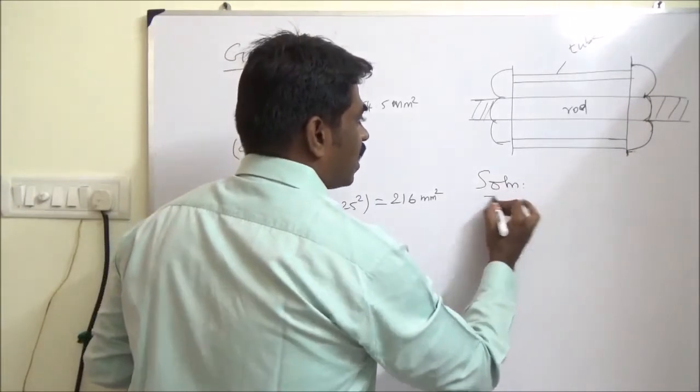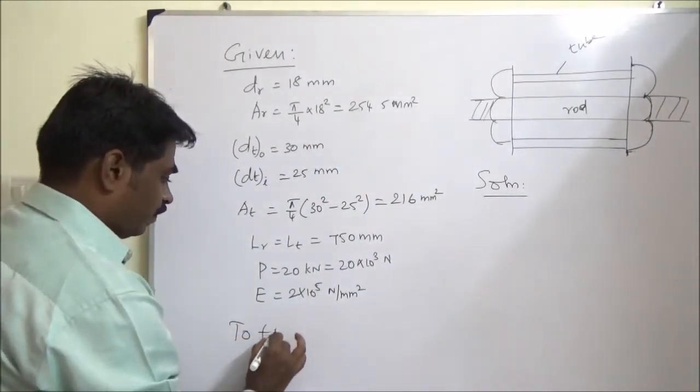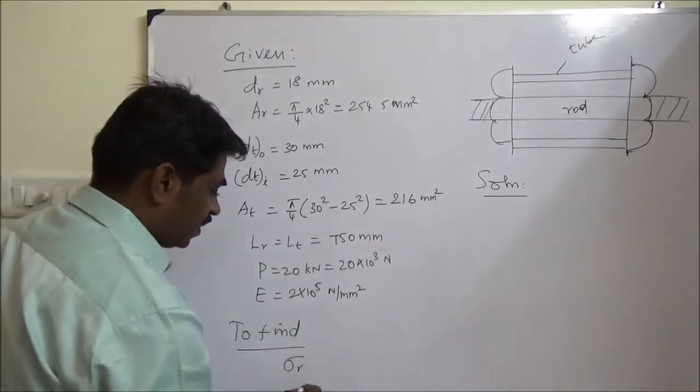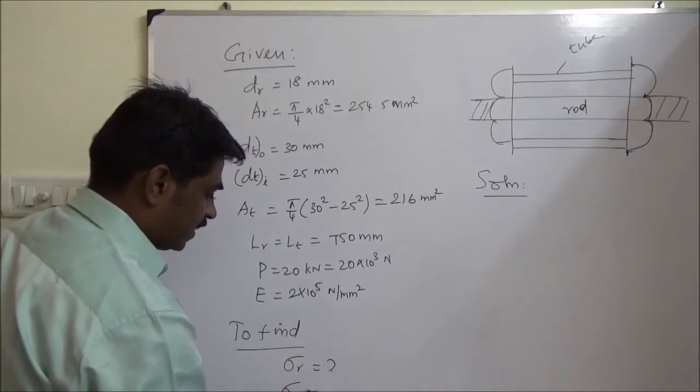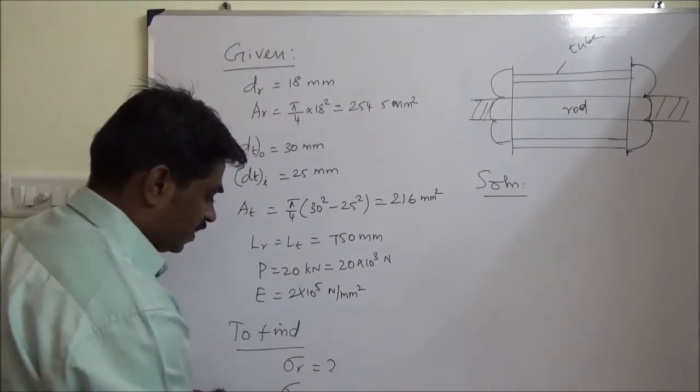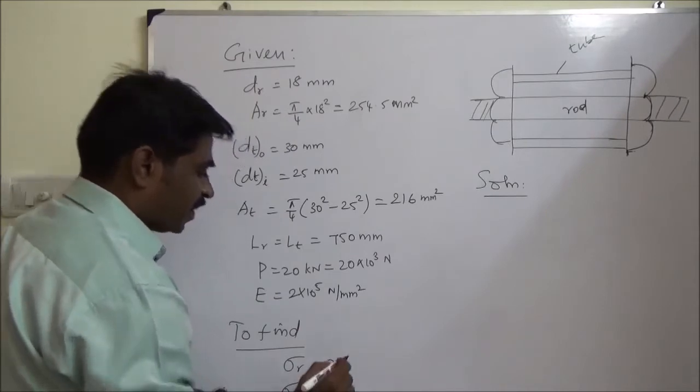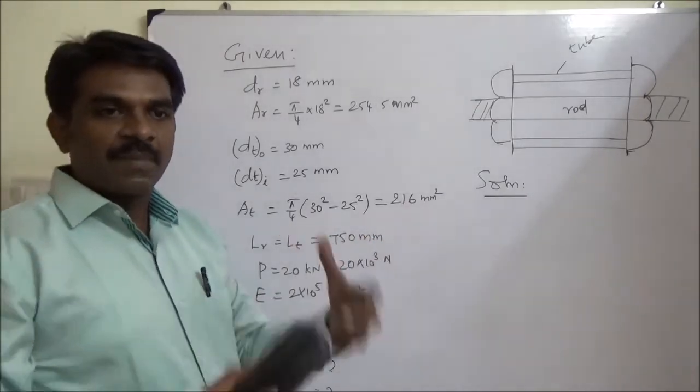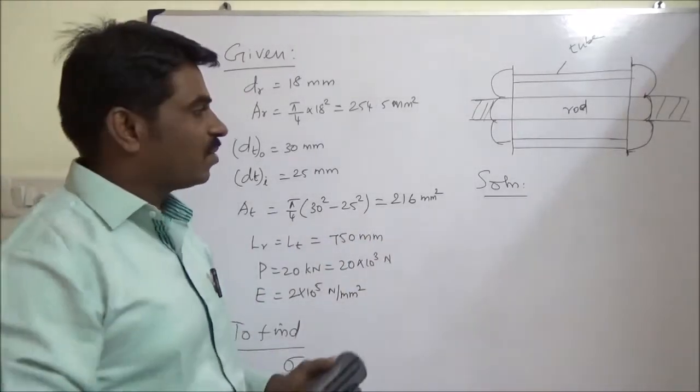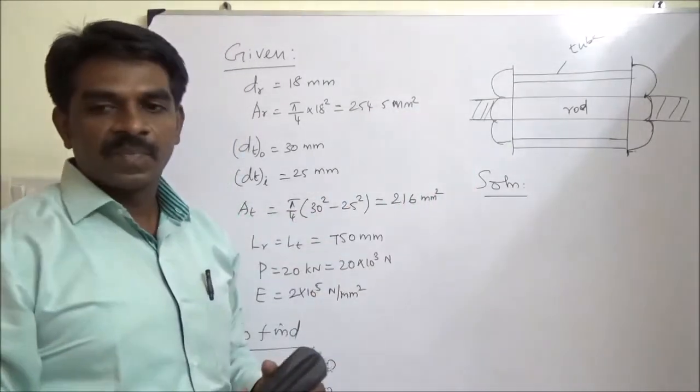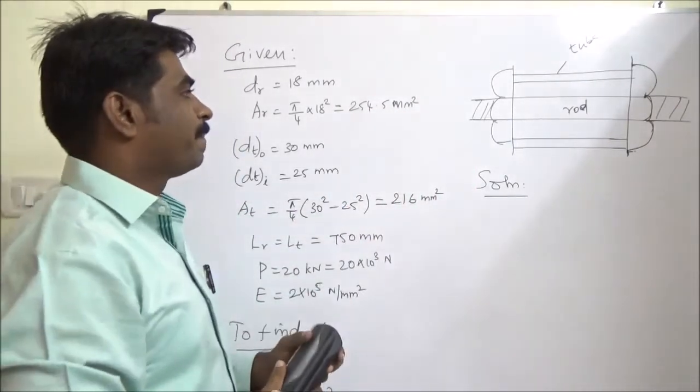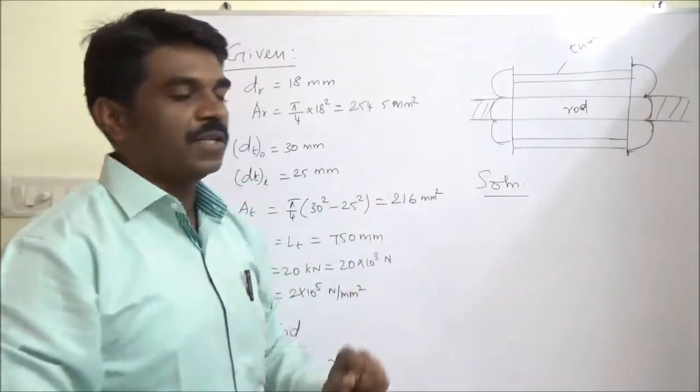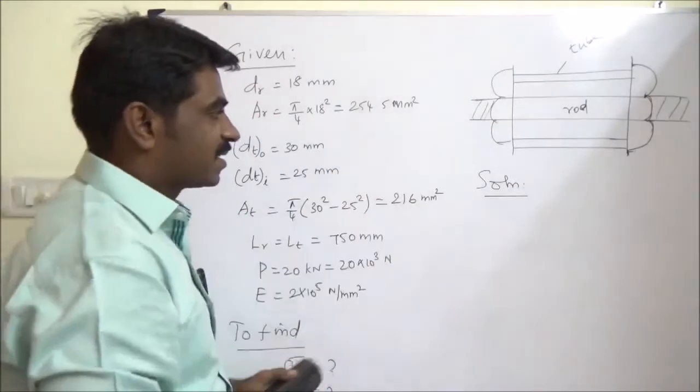What is asked is the stresses in the rod, the stress in tube when the force is 20 kilo Newton. The second part is quite interesting: when the nut is further tightened one fourth of a turn, what is going to happen? What is the stress induced in rod and the tube?